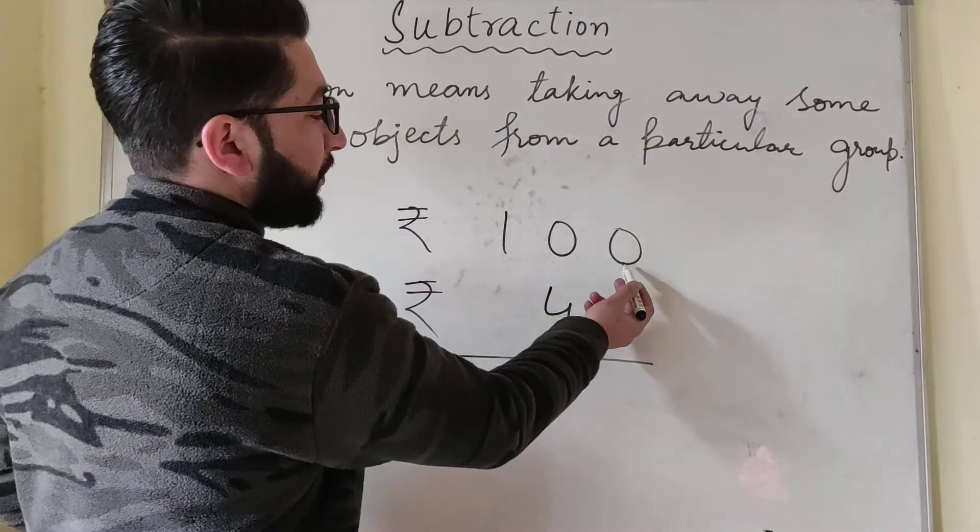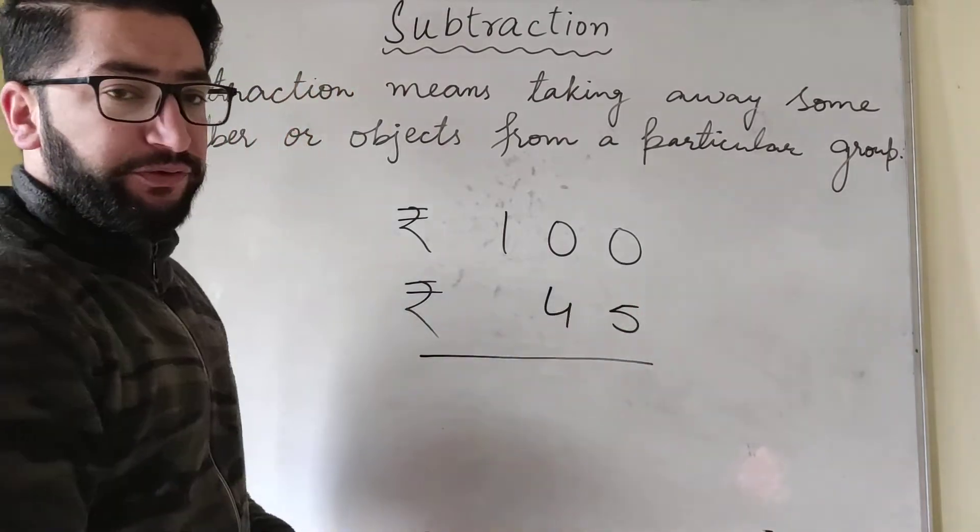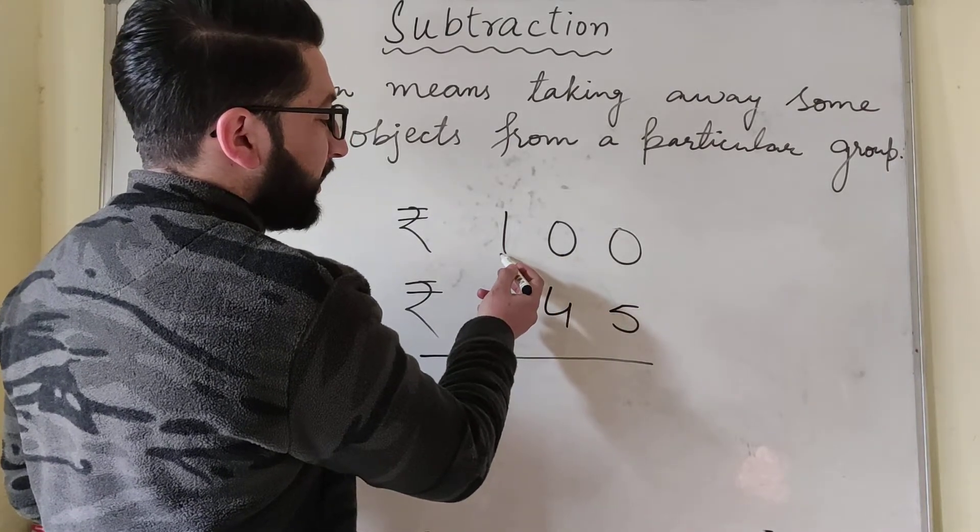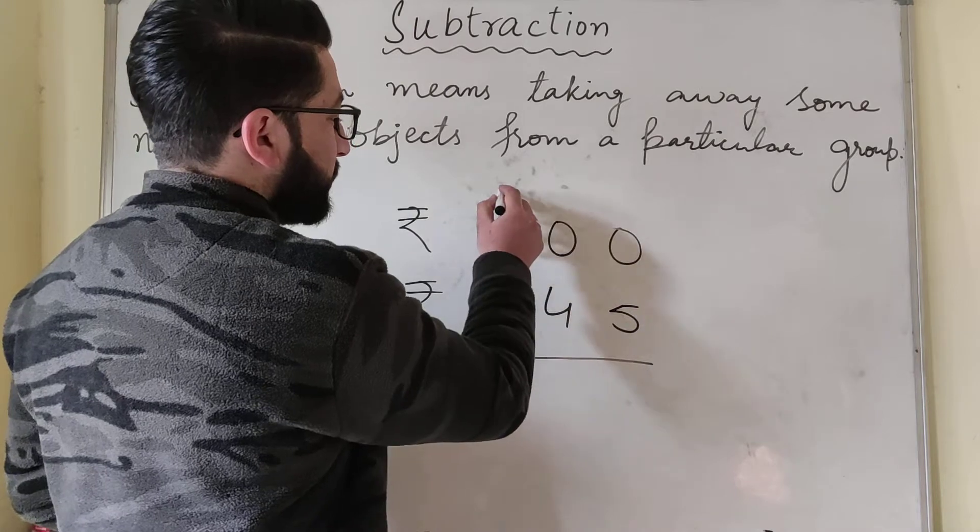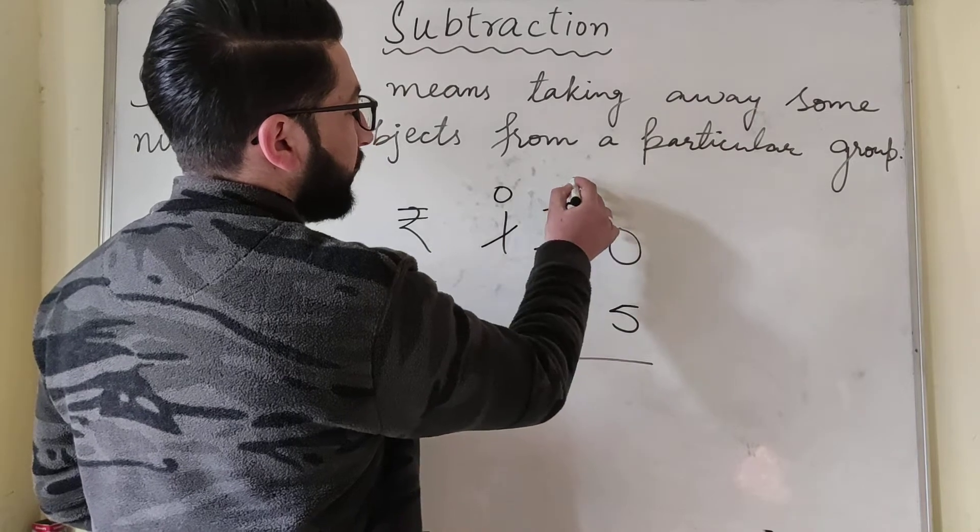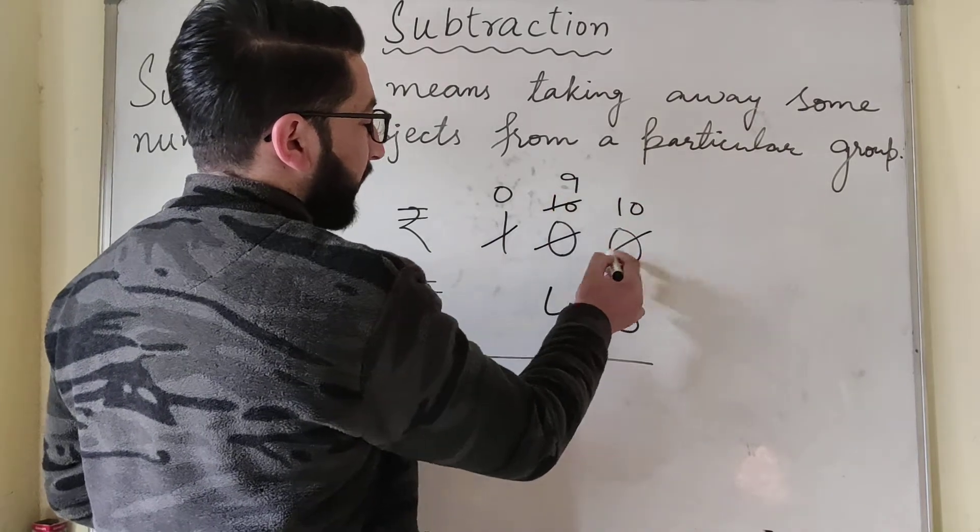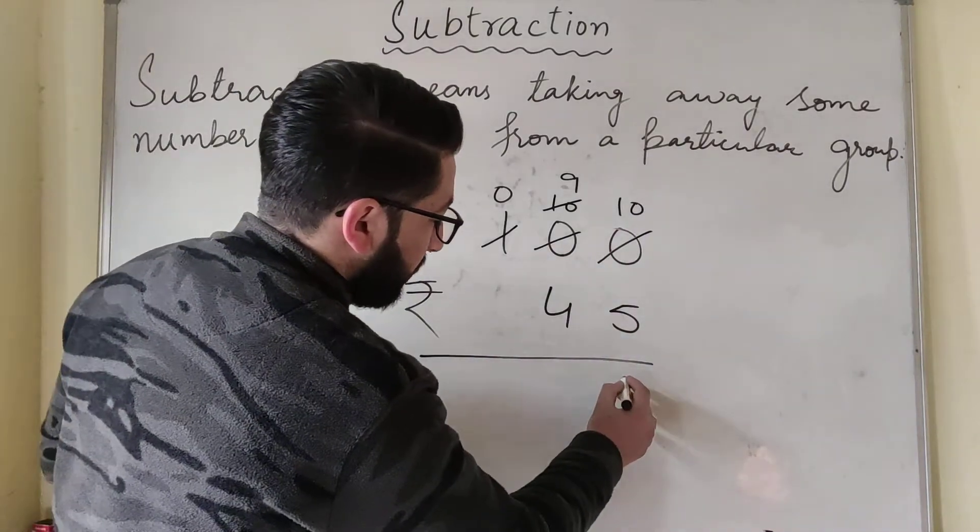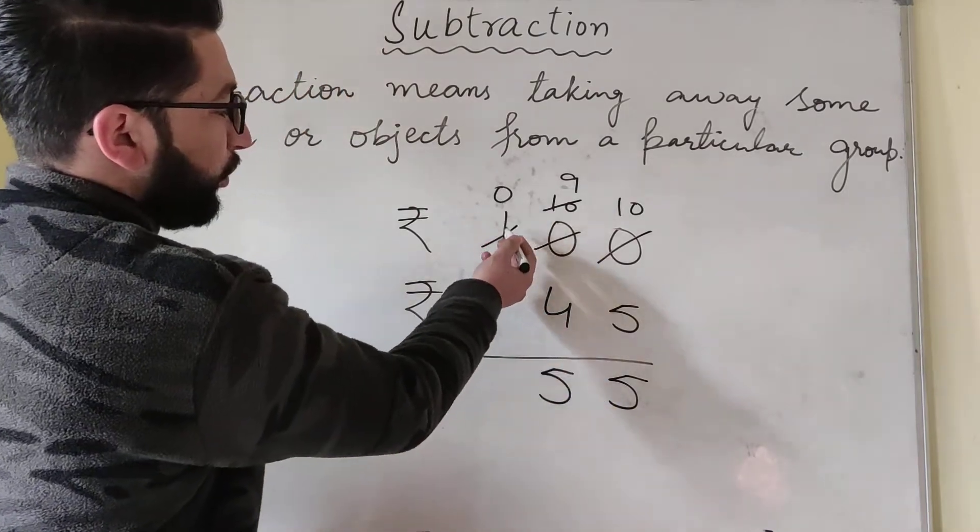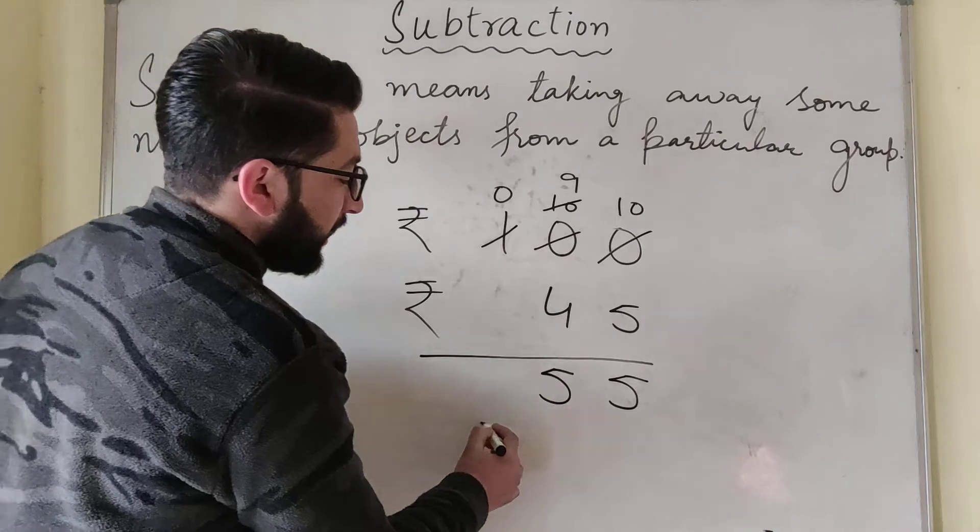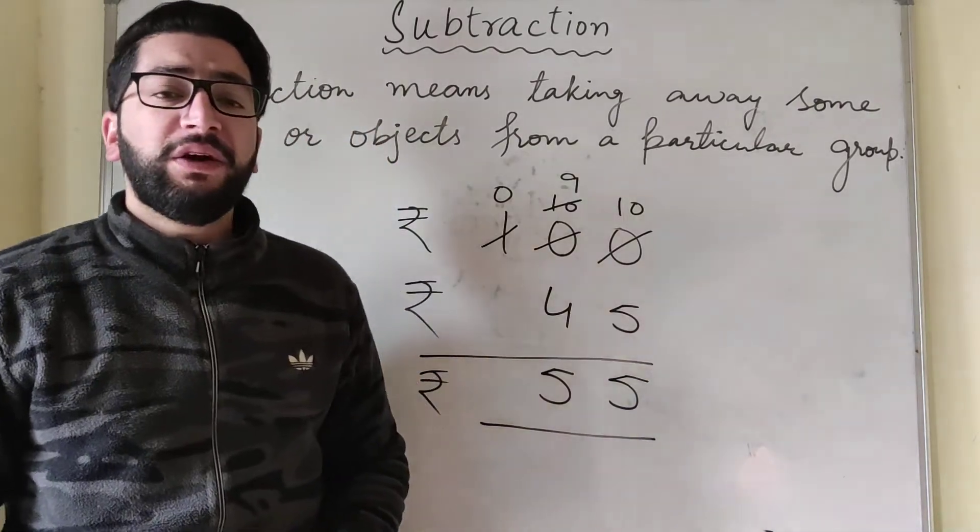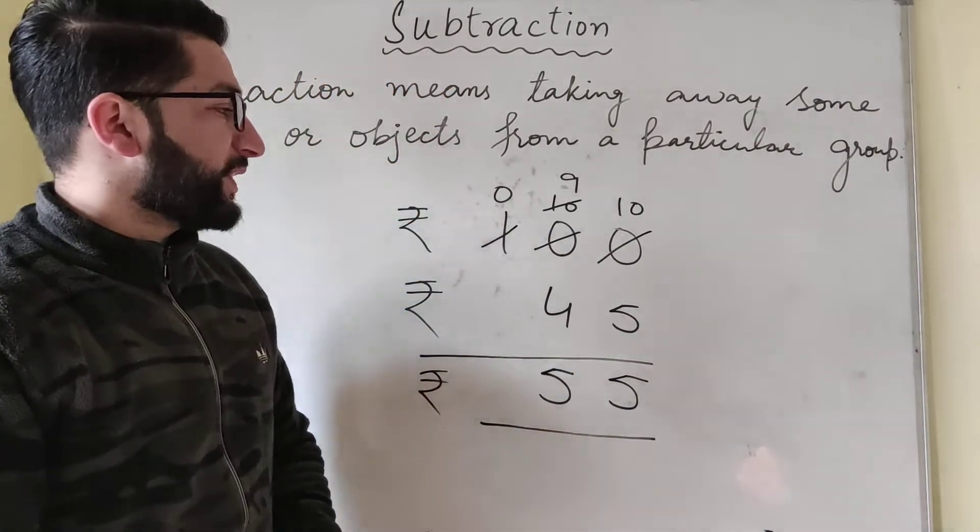So here it is 0. We can't subtract 5 from 0. So what will this 0 do? It will move to this 0. This 0 will move to this 1 and this 1 will help. It will remain 0. This 0 will become 10. It will give 1 away to this 0. It will remain 9 and this 0 will become 10. So 10 minus 5 will be 5, 9 minus 4 will be 5, and 0 minus nothing is 0.